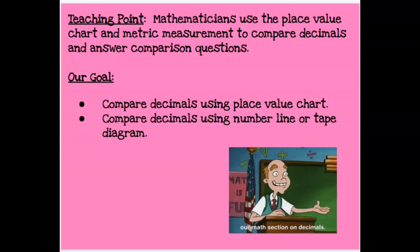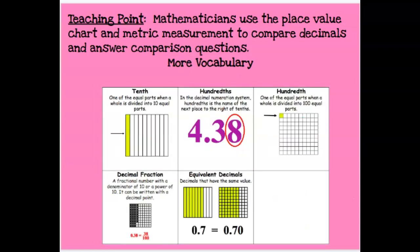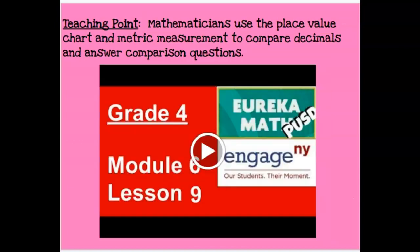The teaching point today is: mathematicians use the place value chart and metric measurements to compare decimals and answer comparison questions. You can refer to your vocabulary sheets that are attached to your math tools for reference. We're going to watch a video that's going to help us really understand how to make these comparisons using a place value chart and a number line.